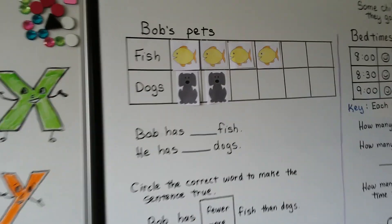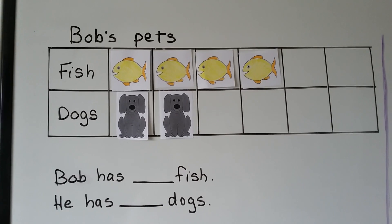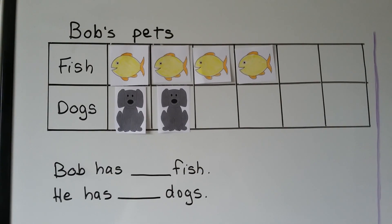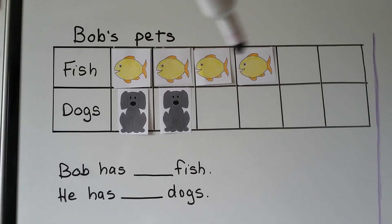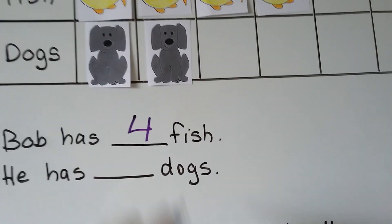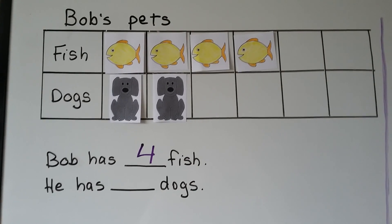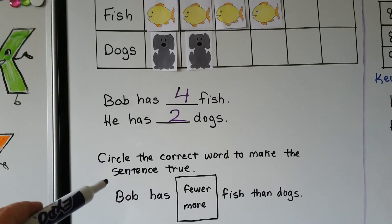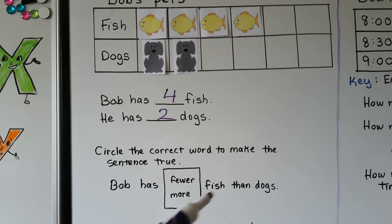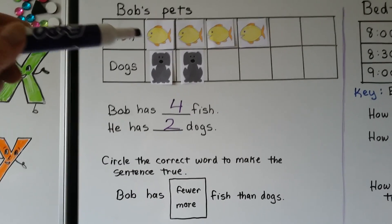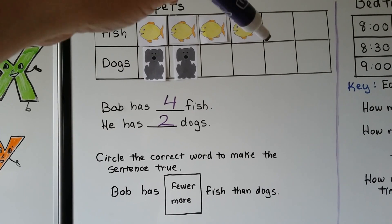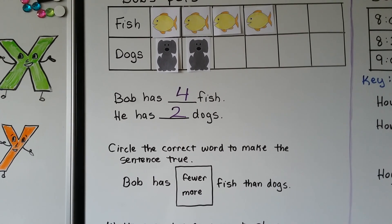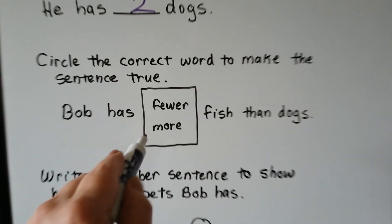Let's try another one. These are Bob's pets — there are fish and dogs. Bob has blank fish. We look at the picture graph and count: one, two, three, four fish. How many dogs does Bob have? We can quickly look at the picture graph and see that he has two dogs. Bob has fewer or more fish than dogs? We look at the fish — there are four of them — and he only has two dogs. He has more fish than dogs, so we circle the word 'more.'